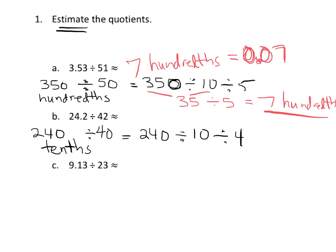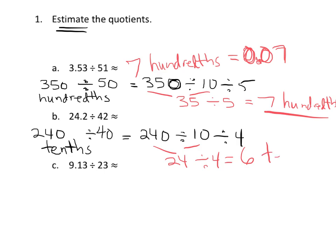Back to problem B: we have 240 tenths divided by 40. That's really 240 divided by 10, divided by 4 — and we keep track that it's 240 tenths. So 240 divided by 10 is 24, divided by 4 gives us 6, and it's 6 tenths. Six tenths is written 0.6.